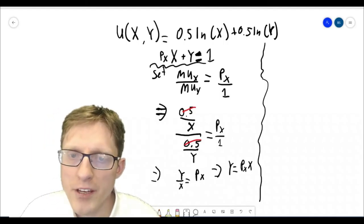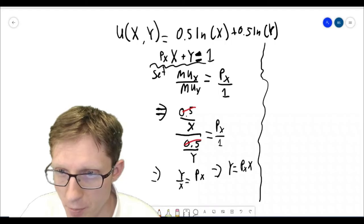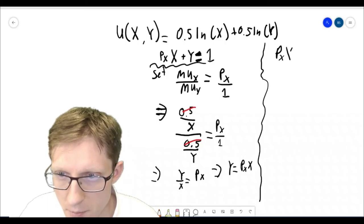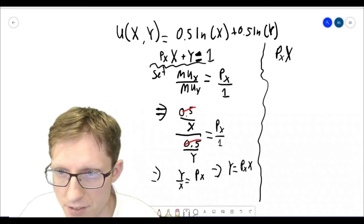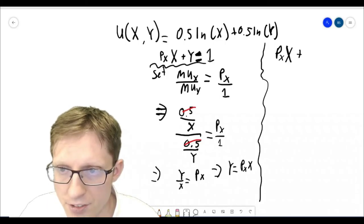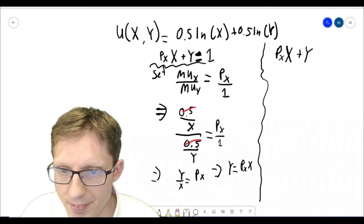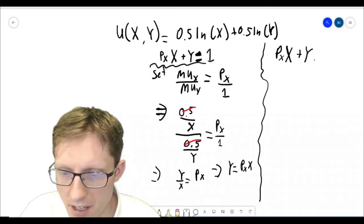Okay, so now we can use the information from the budget constraint to help us finish solving this problem. So we know the budget constraint tells us that the price of x times the amount of x, that's the amount spent on x, plus the price of y, which is just 1, times the amount of y consumed, the amount spent on good y, is equal to their income.